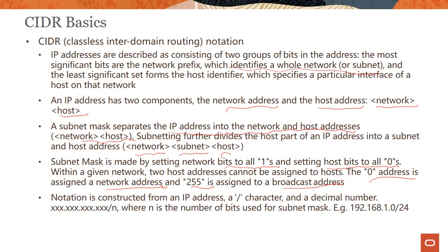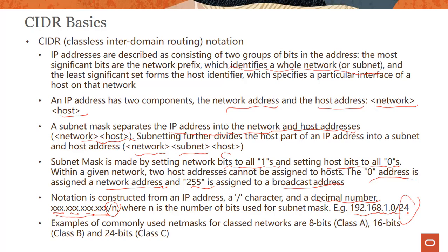The notation is straightforward. IP addresses are 32 bits long with 4 octets — each octet being 8 bits. You specify the CIDR notation using the slash character and a decimal number, for example 192.168.1.0/24, where /24 is the subnet mask. Let's look at how this works in practice.